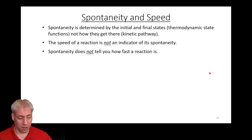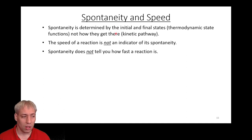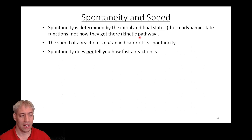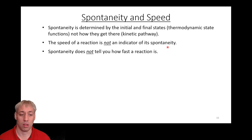We also need to clarify the difference between spontaneity and speed. In chapter 12 we talked about chemical kinetics — how fast things happen. Spontaneity only tells you whether something will happen: it tells you where you start and where you end and whether that's favorable. It tells you nothing about how you get there — that's the purview of kinetics. On a reaction coordinate diagram, the start and end are defined by thermodynamics; the pathway is determined by kinetics. The speed of a reaction is not an indicator of its spontaneity.